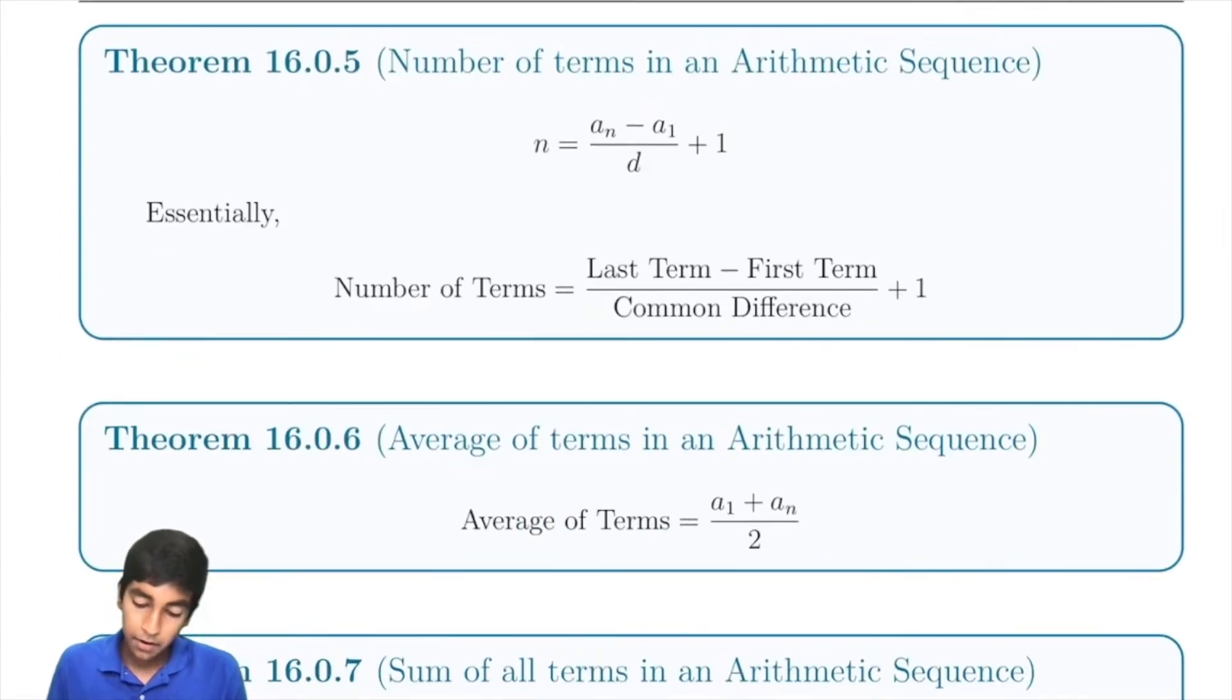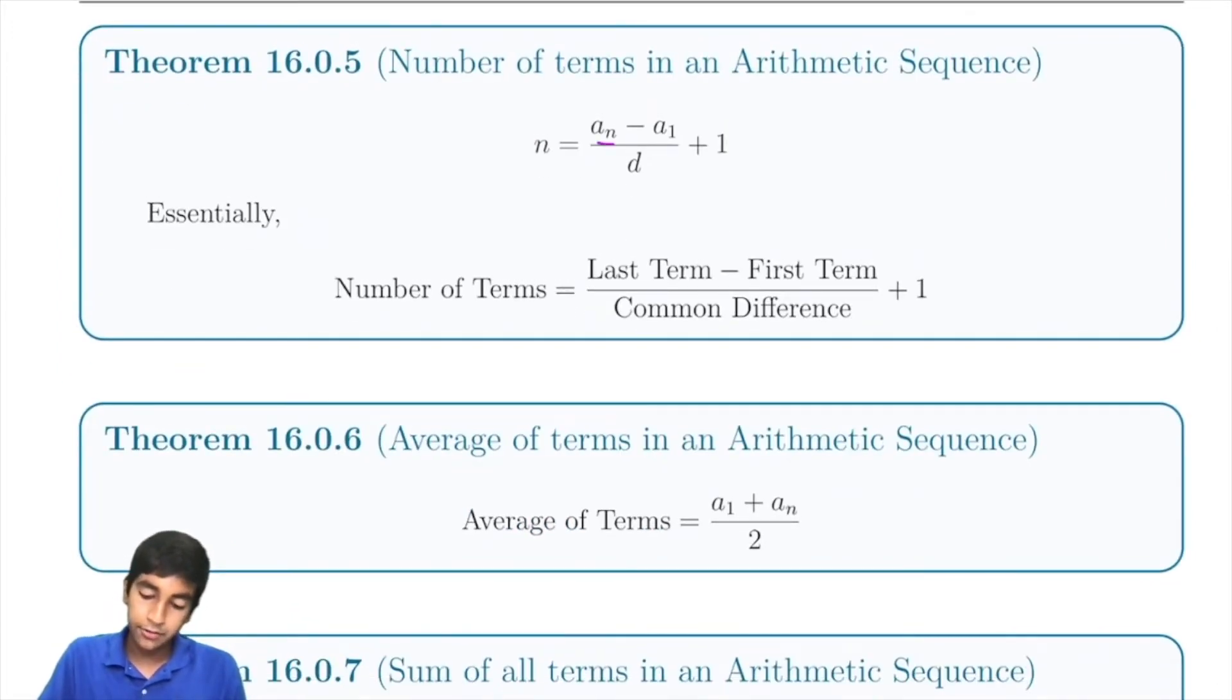And the number of terms is just the last minus first term divided by the common difference plus one.